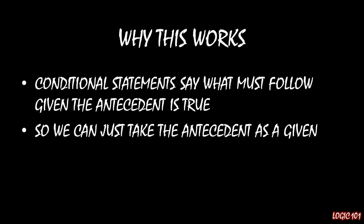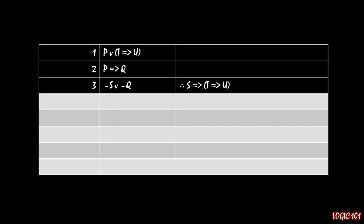This might help if we see an example. So here we go right now. We have three premises: P or T implies U, P implies Q, and not S or not Q. And we want to prove that S implies the implication T implies U.